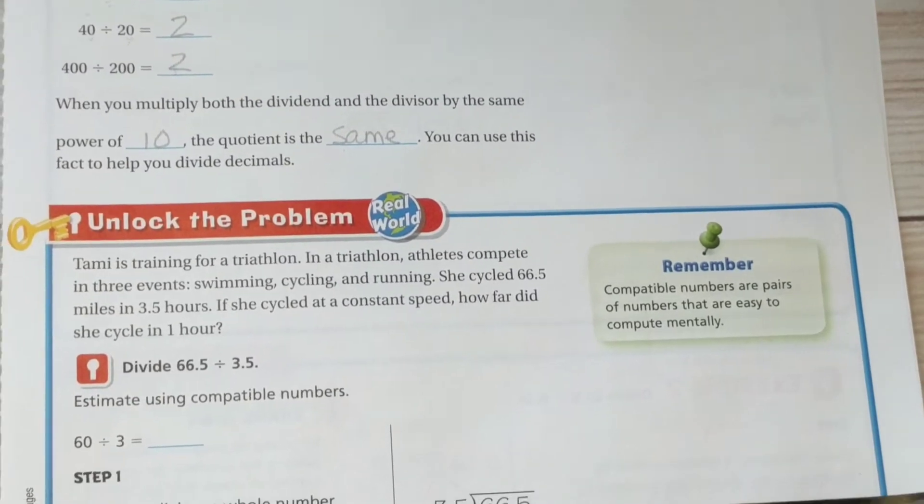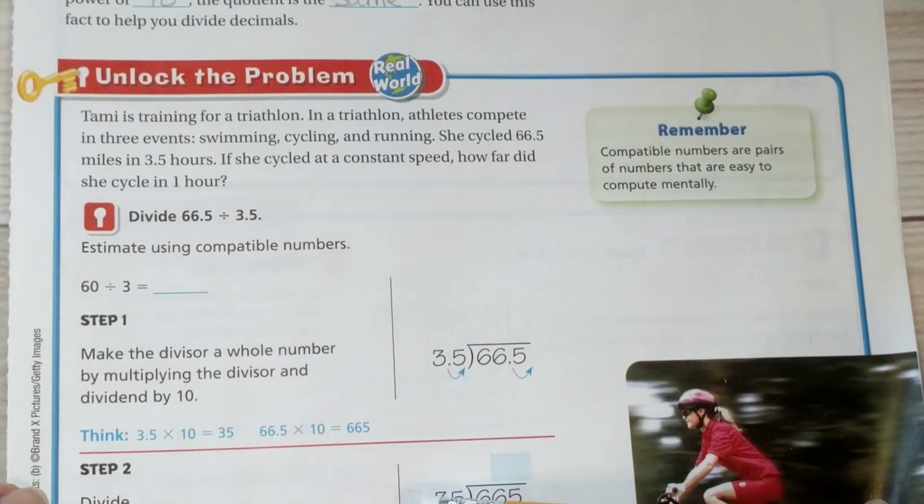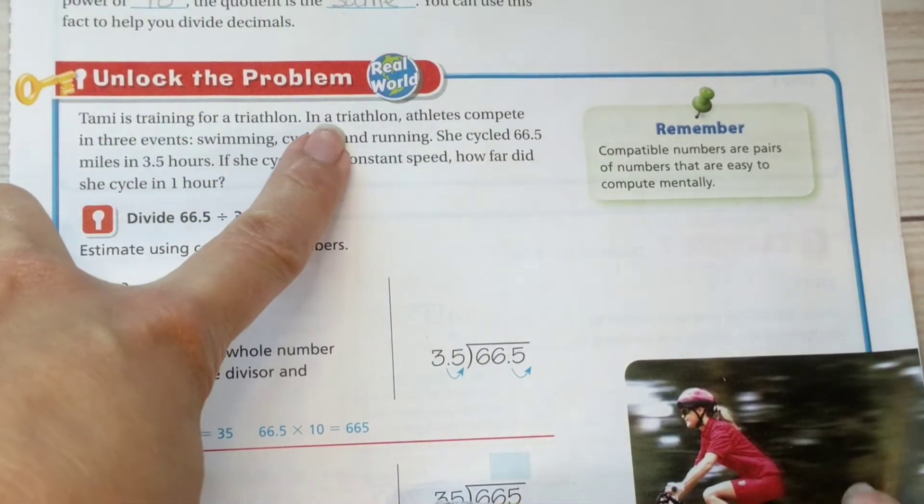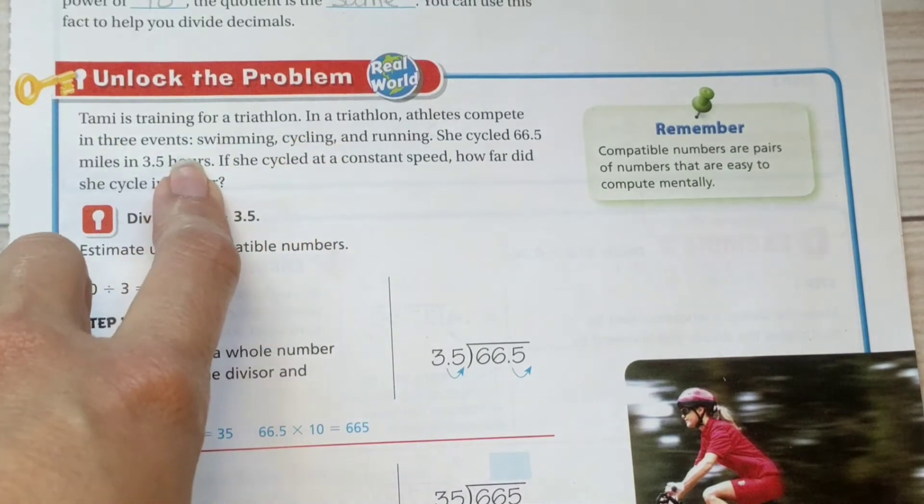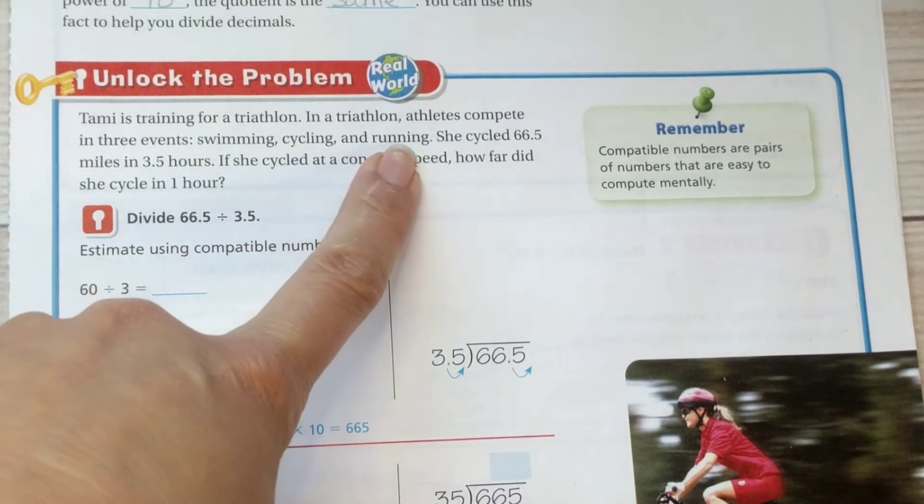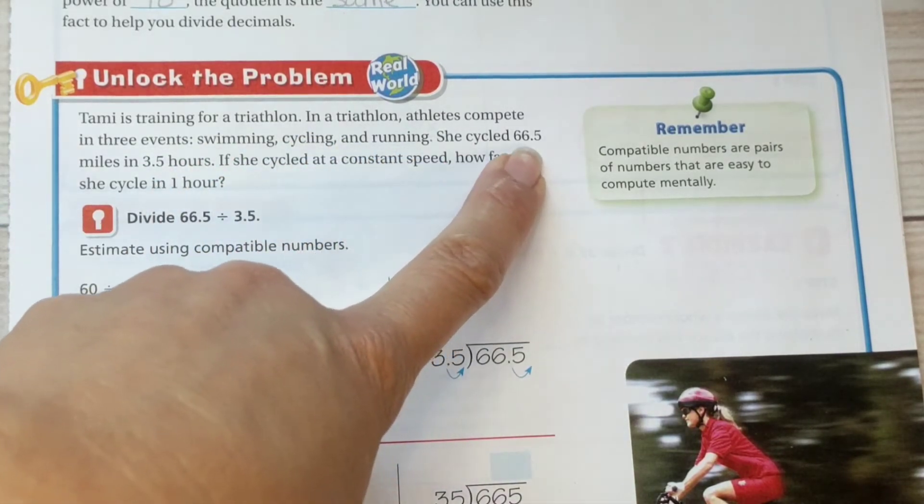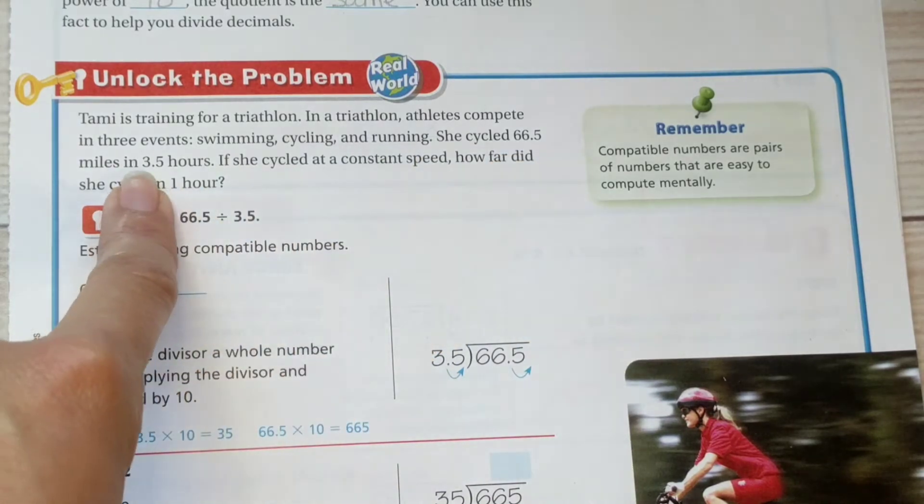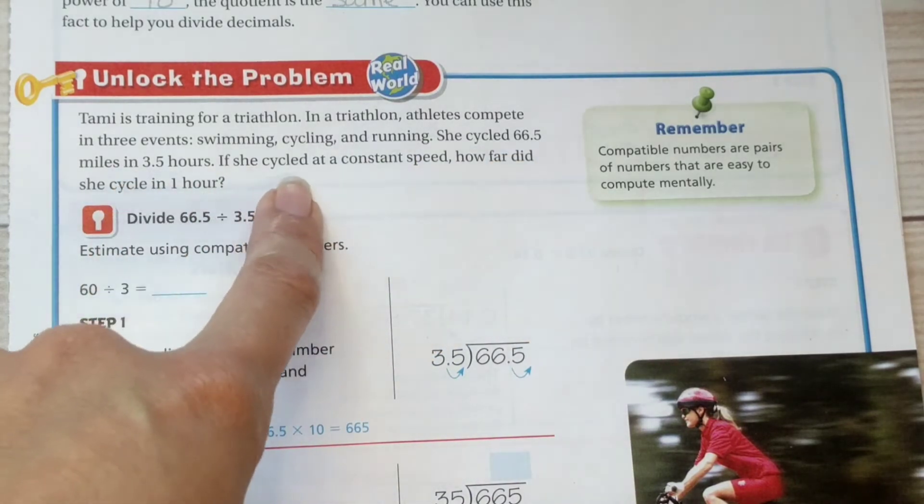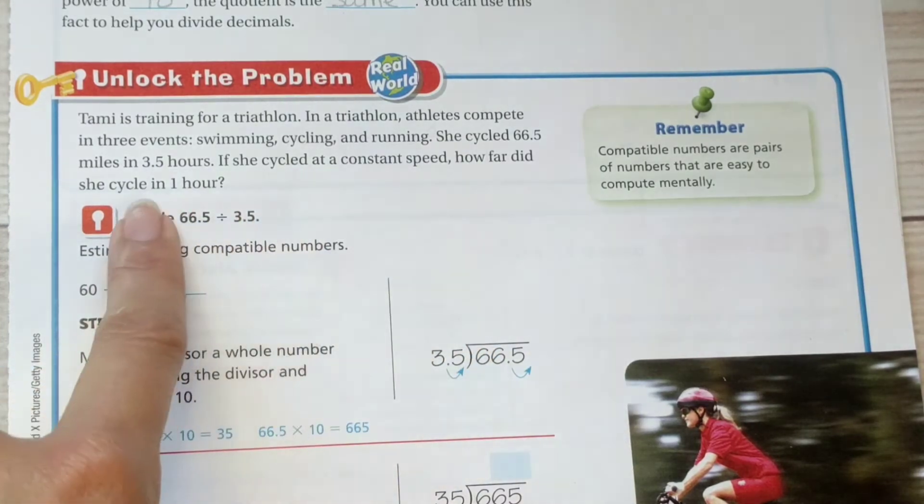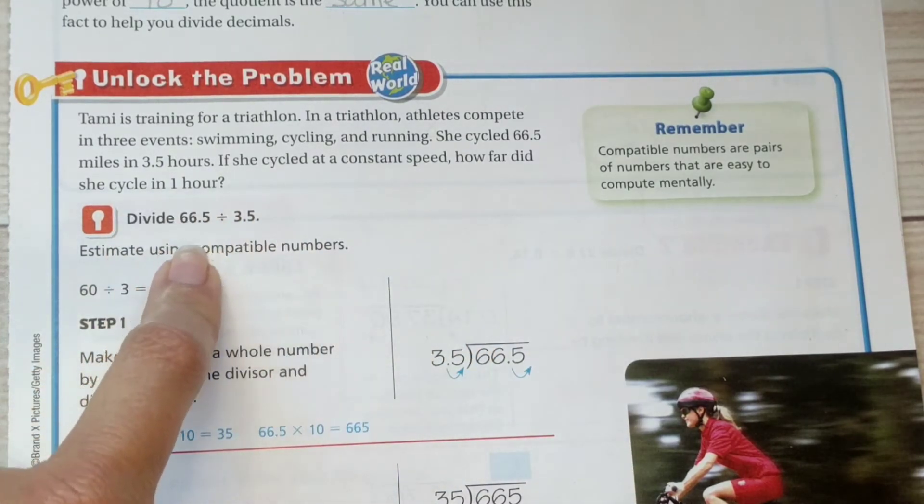Tammy is training for a triathlon. In a triathlon, athletes compete in three events: swimming, cycling, and running. She cycled 66.5 miles in three and a half hours. If she cycled at a constant speed, how far did she cycle in one hour? In order to discover that, we're going to have to divide 66.5 by 3.5.